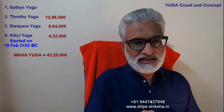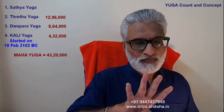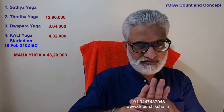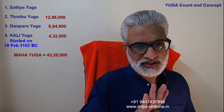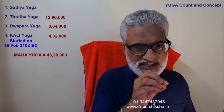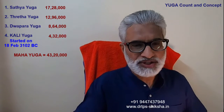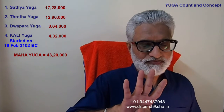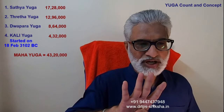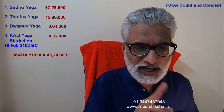And Satya Yuga is 4 times Kali Yuga — that means 4 multiplied by 4,32,000 — which will become 17,28,000 years. So: 4 times is Satya Yuga, 3 times is Treta Yuga, 2 times is Dvapara Yuga, 1 time is Kali Yuga. Therefore, 10 times of Kali Yuga is 1 Maha Yuga.